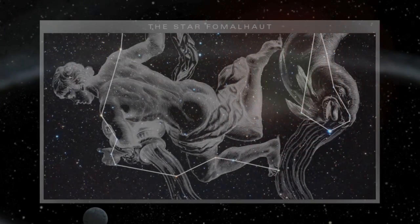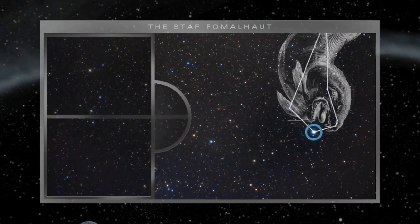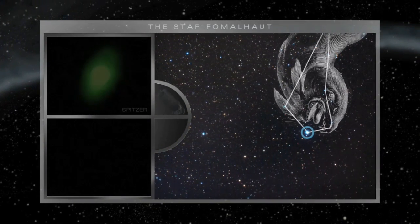Around the star called Fomalhaut, Spitzer sees a ring of warm dust, and Hubble finds evidence that a giant unseen planet has been sculpting the ring.